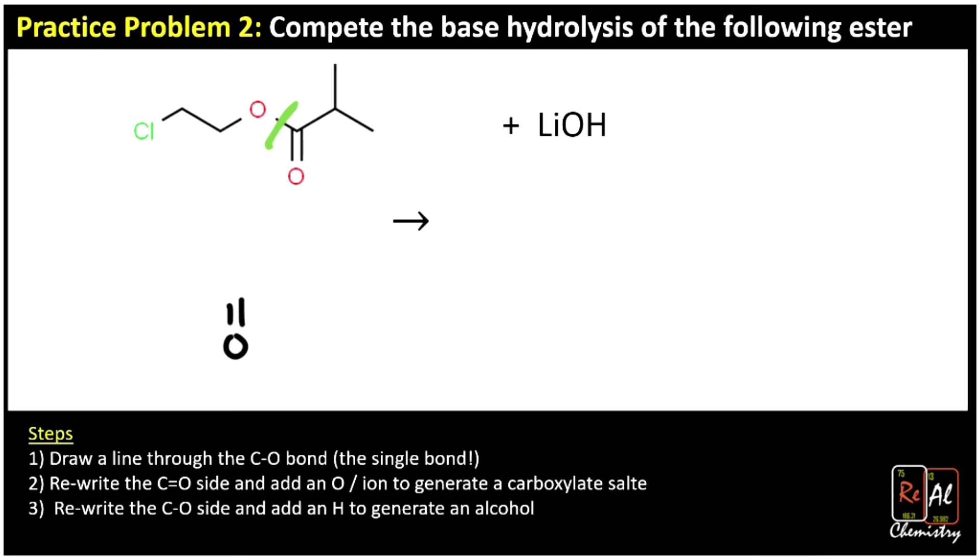So that goes down to our double-bonded oxygen, up to a carbon, up to another carbon, and down to another carbon. If it feels weird to you to write that upside down, you can go ahead and just flip that ester first. And then we're going to go ahead and take the O and the Li from the lithium hydroxide. So it goes to an O⁻ and an Li⁺. There's our carboxylate salt.